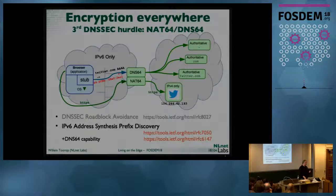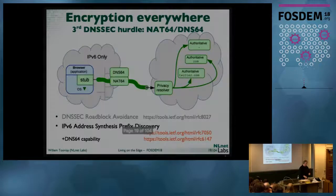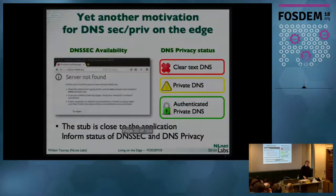NAT64/DNS64 is a hurdle. From IPv6-only networks, you still want to reach IPv4-only servers, which is done by synthesizing an IPv6 answer that obviously cannot be DNSSEC verified. So a versatile stub should detect the synthesis, then ask for the actual answer and do the synthesis itself. This RFC was originally for DNSSEC-validating stubs, but it also applies to DNS over TLS.